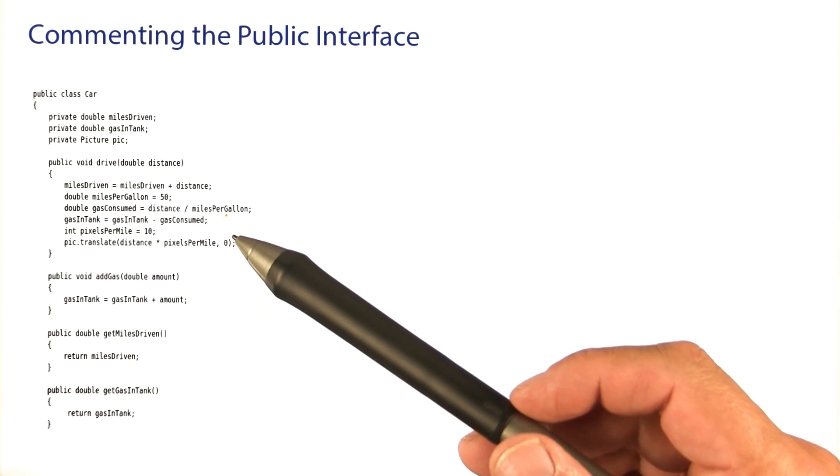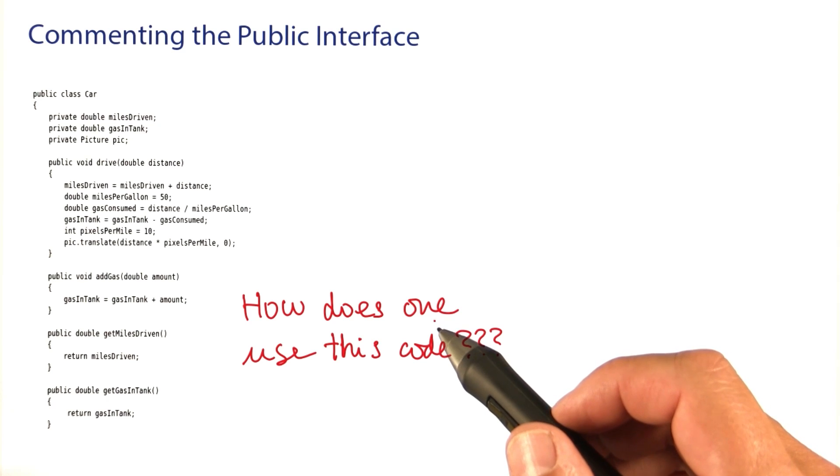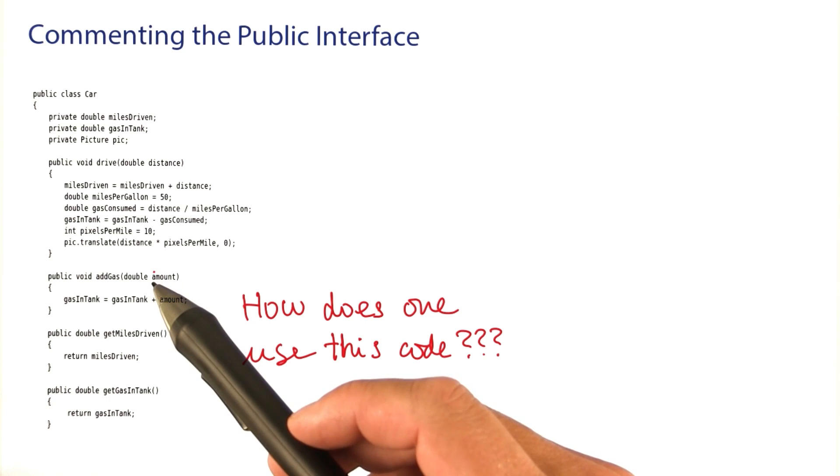But we've forgotten something very, very important. How does one use this code? And who's one? That would be the programmer who doesn't want to know what goes on inside the car class, but who just wants to write programs that drive cars around.